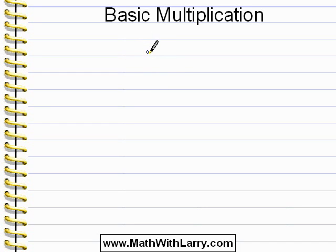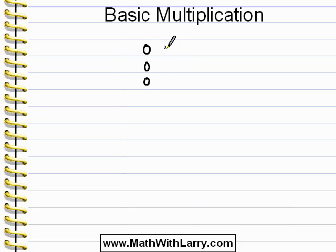let's say there are four people at a party and I'd like to give three cookies to each person. One way that I could do that is just by adding. I can give three cookies to the first person, plus three to the second, plus three to the third, and three to the fourth.